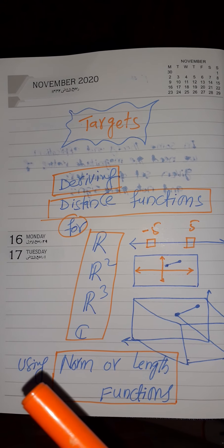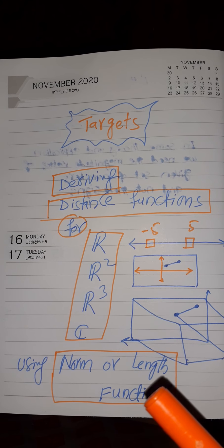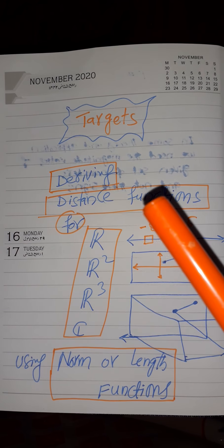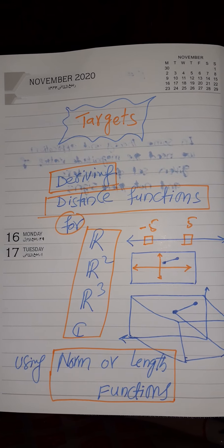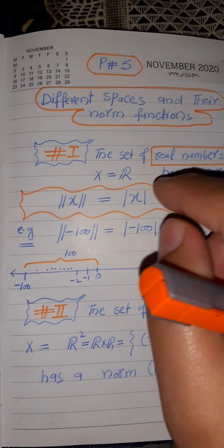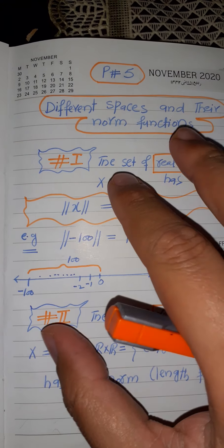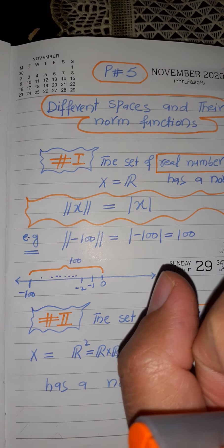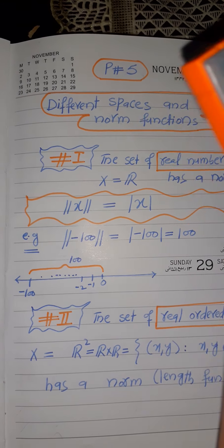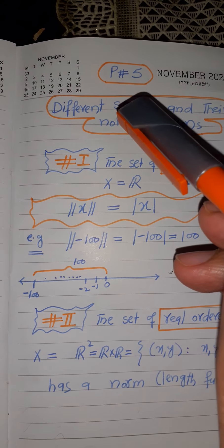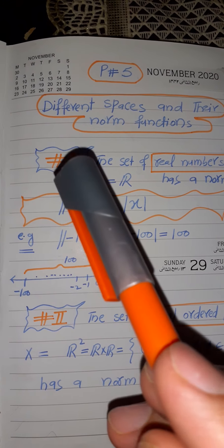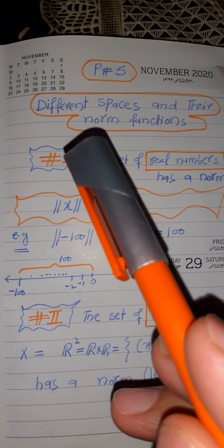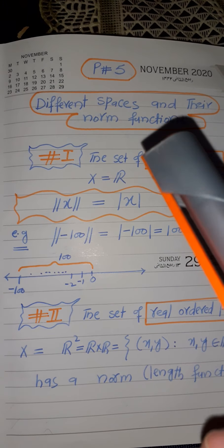We will be using the norm or length function for the derivation of these distance functions. For this we revise our last lecture, lecture number 18. This page is from lecture number 18, covering different spaces and their norm functions — length functions.